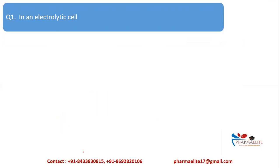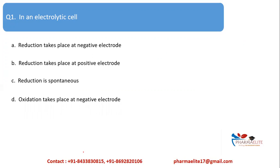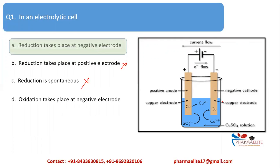Let's look at practice questions. First question: In an electrolytic cell, which statement is correct — reduction takes place at the negative electrode, at the positive electrode, reduction is spontaneous, or oxidation takes place at the negative electrode? In the electrolytic cell, the positive anode undergoes oxidation and the negative cathode undergoes reduction. Reduction takes place at the negative electrode — option one is correct. The reaction is non-spontaneous since external electrical energy is used.